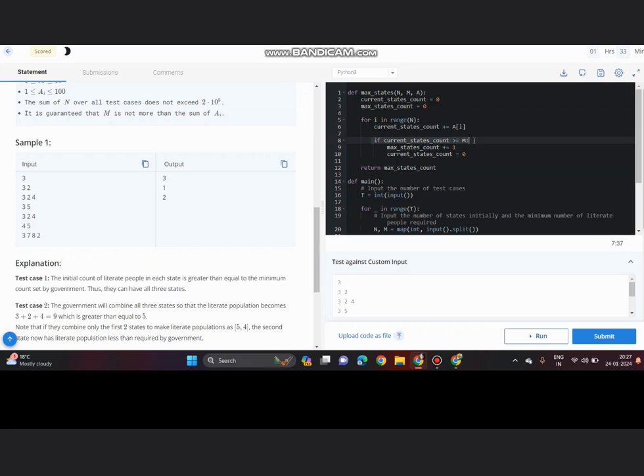If current state count is greater than equal to m here we are consecutively adding elements and whenever it is greater than equal to m, then we are incrementing the maximum state count and putting our current state count to 0 so that it starts adding the elements again.